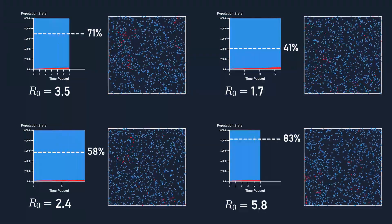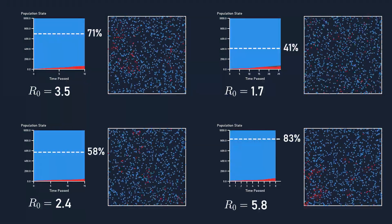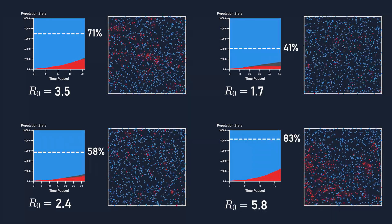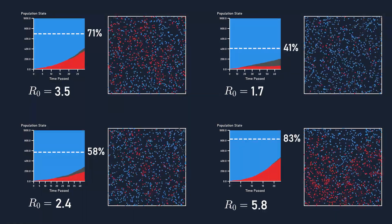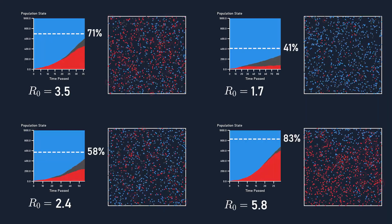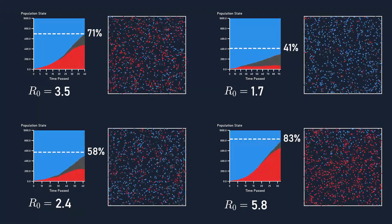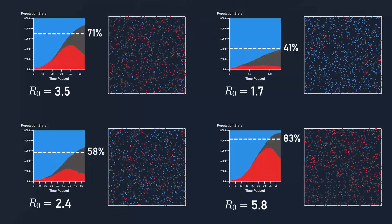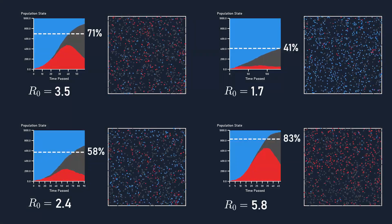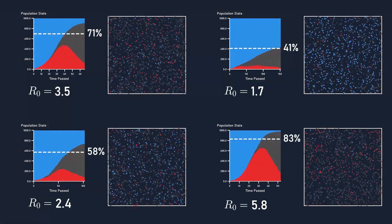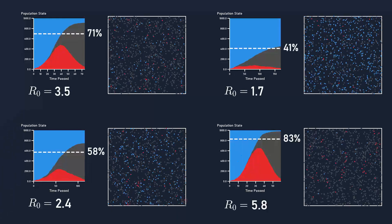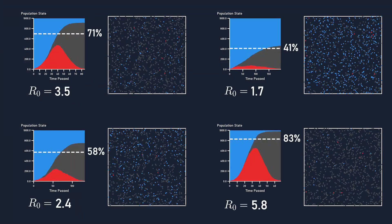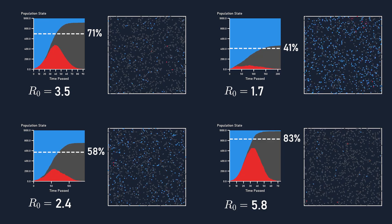Here are some simulations with other R-naught values, and we can see that they all have their infectious population start declining when S hits 1 over R-naught. By the way, in order for the simulation's numbers to stay more consistent, it's actually taking the average of 10 simulations in the background, only one of which is getting drawn to the screen. Numbers are also getting rounded to one decimal place, which may be the reason for any inaccuracies.